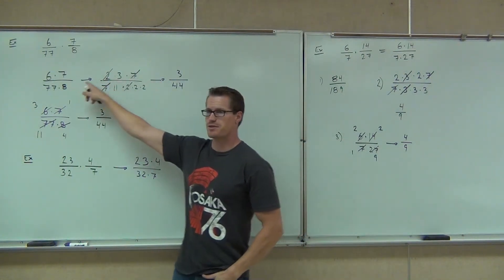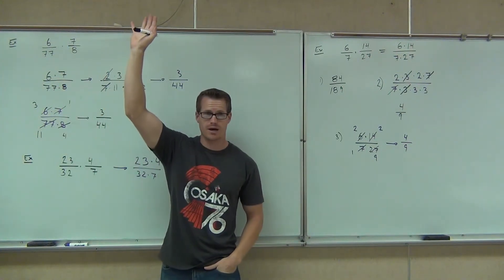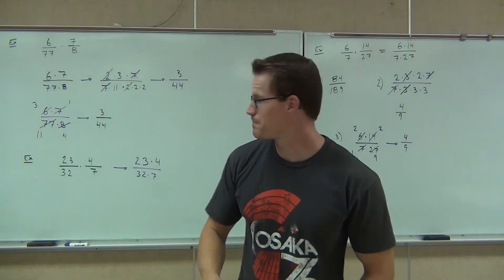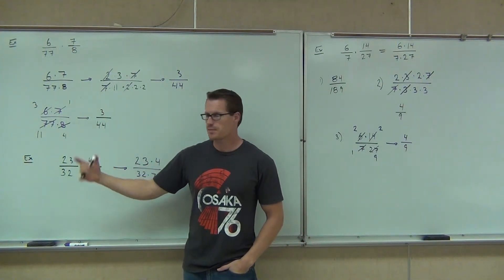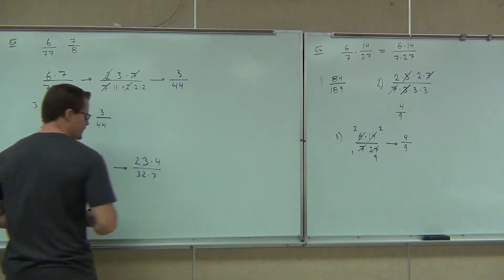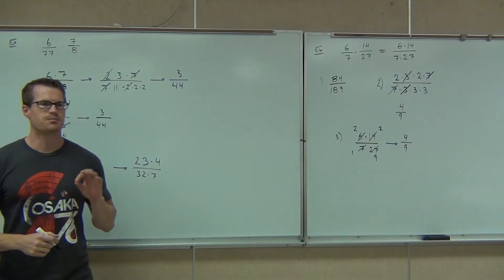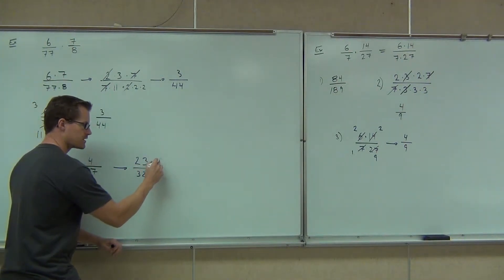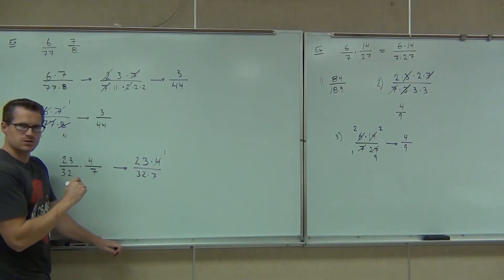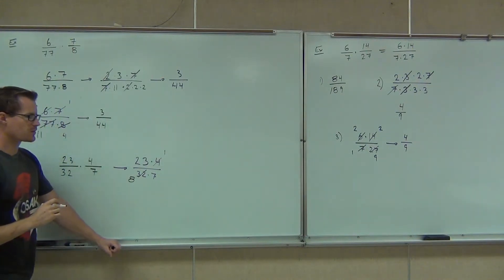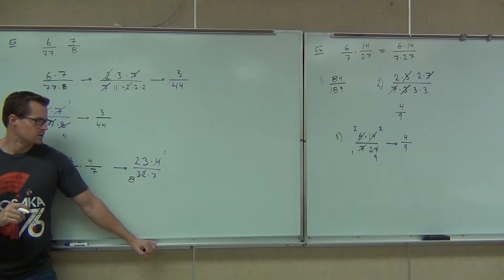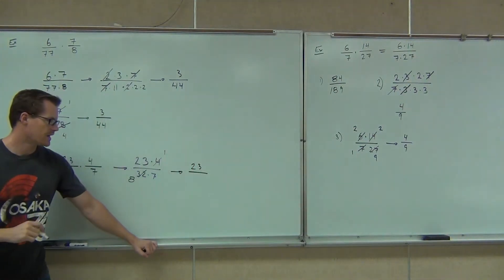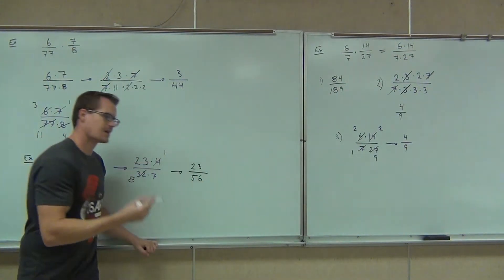I'm going to skip the prime factorization method from now on and just show you the cross-cancellation method. Can you see a number that divides something on the top and the bottom? 4 and 32. What factor goes into both 4 and 32? 4. We want the biggest number — we don't want 2 because then you'd have to do it again. 4 goes into 4 once; 4 goes into 32 eight times. Anything else? 23 is a prime number; 7 is a prime number. So multiply the rest: 23 times 1, and 8 times 7 gives you 56. That answer is not simplifiable.